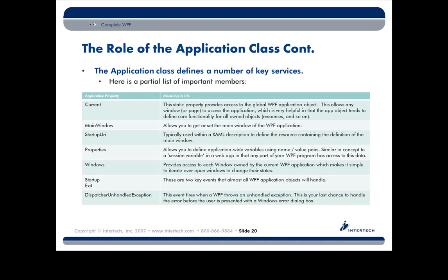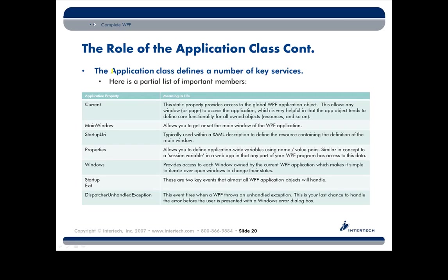Here's a breakdown of some core members of the Application class. You actually subclass Application — you're not calling everything statically. There are some static members, like Current, but the majority are instance-level. The Application maintains a collection of every window currently in memory for that application, making it simple to enumerate all windows and minimize them, or find a window by title and close it.